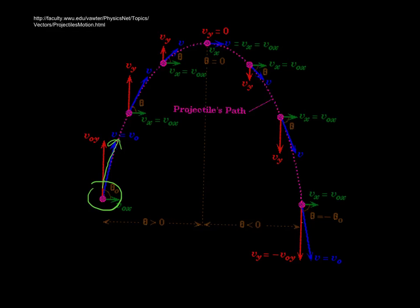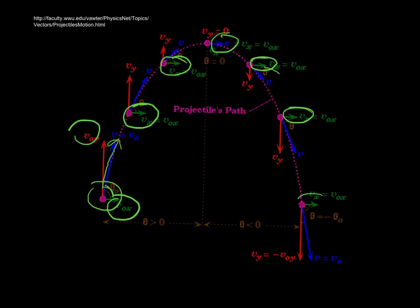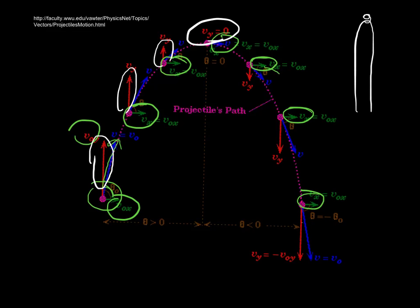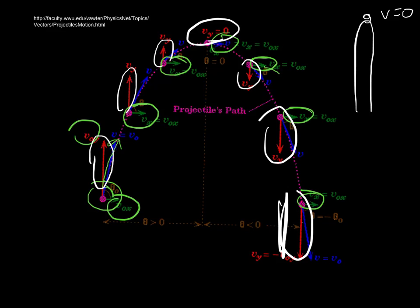That initial velocity makes an angle, so you take it and break it up into its x and y components. The x-vector stays the same length the whole time. But the y-vector is getting smaller and smaller, until at the top — just like in free fall — the vertical velocity reaches zero.